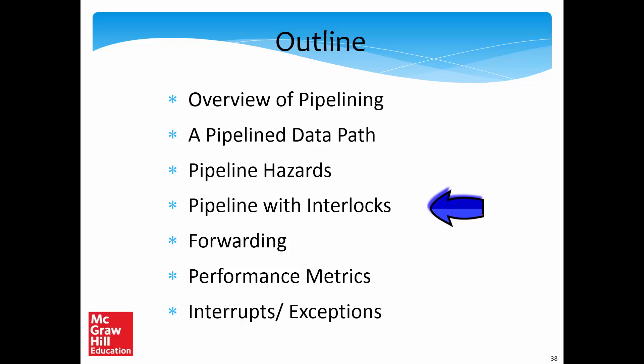We shall now look at two hardware solutions: a pipeline with interlocks and a pipeline with forwarding. Software is good but the problem is that the compiler needs to know all the hardware details. This is not always possible because it means a different compiler is required for every new pipeline design, and code that runs on one processor may not run correctly on another.